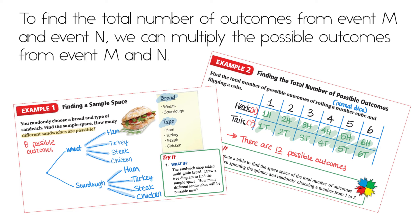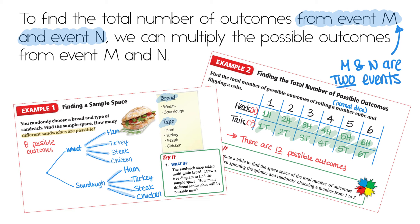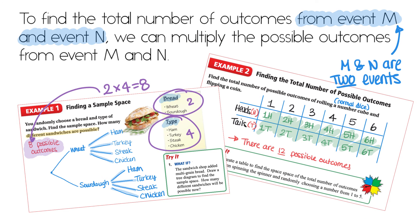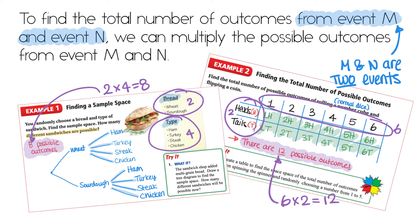Perhaps you've noticed from the last couple of examples, there's a quick way to determine the total number of possible outcomes. To find the total number of outcomes from event M and event N — which just means two different events — we can multiply the possible outcomes from each event. For example, with the sandwiches and bread, we had two possible bread outcomes and four possible sandwich types, and two times four gave us eight. For the coin and dice, six times two gives us twelve possible outcomes.